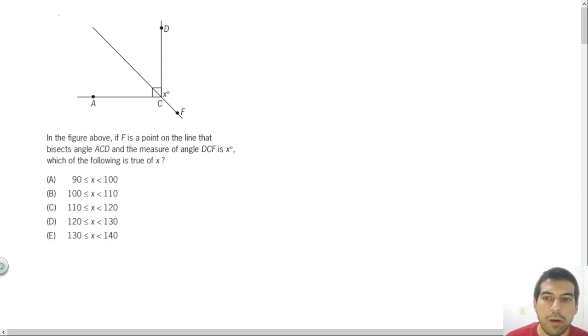In the figure above, if F is a point on the line that bisects angle ACD, and the measurement of angle DCF is x degrees, which of the following is true of x.